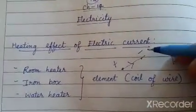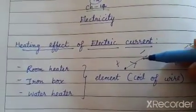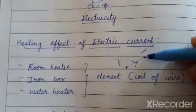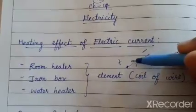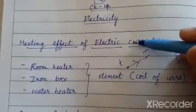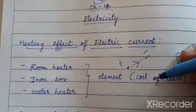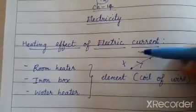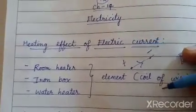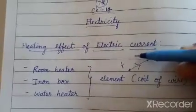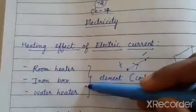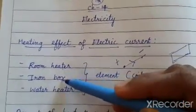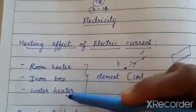First, let us understand what electricity is. When you have a connecting wire and charges are flowing from the positive to the negative terminal, the flow of electricity is detected. So during this passage of electricity, heat is produced. The heat produced is used beneficially by human beings as room heaters, ironworks, and water heaters.